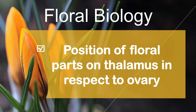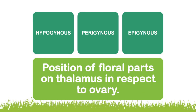Welcome back to our channel AgriCareAS. In this video we are going to discuss the different types of flowers based on the position of floral parts on the thalamus with respect to the ovary. Based on this, there are three types of classification: the first one is hypogynous, the second one is perigynous, and the third one is epigynous.